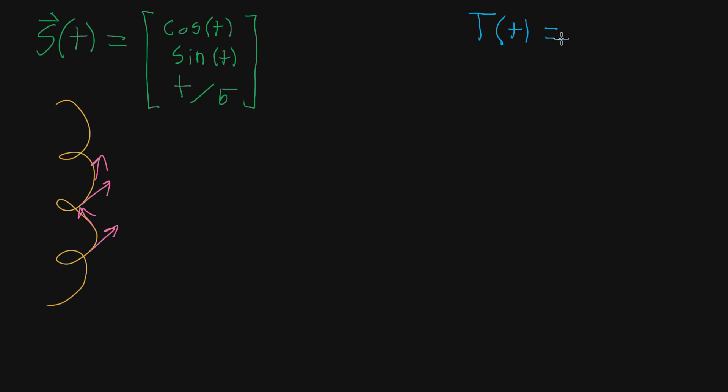To do that, you take the derivative of your parametrization, which gives you a tangent vector, but it might not be a unit tangent vector, so you divide it by its own magnitude. Ultimately, the goal is to find the derivative of this tangent vector function with respect to the arc length.